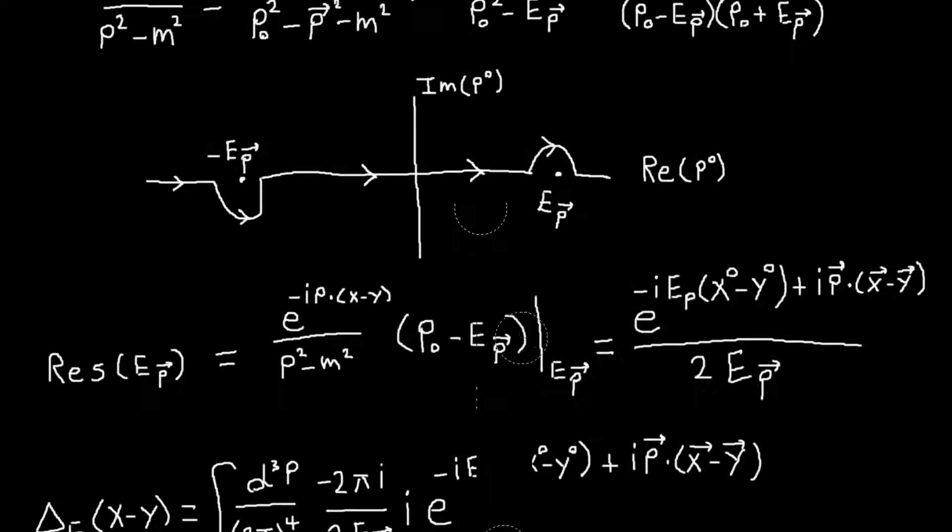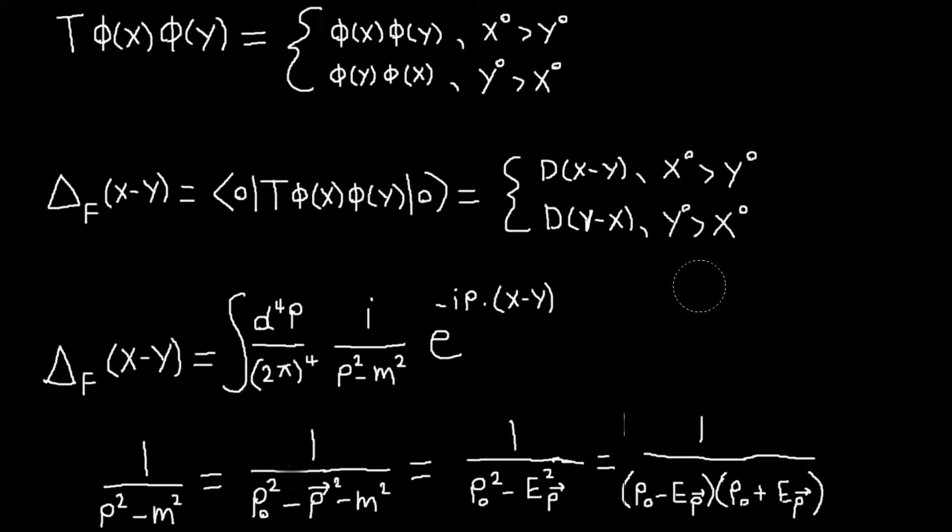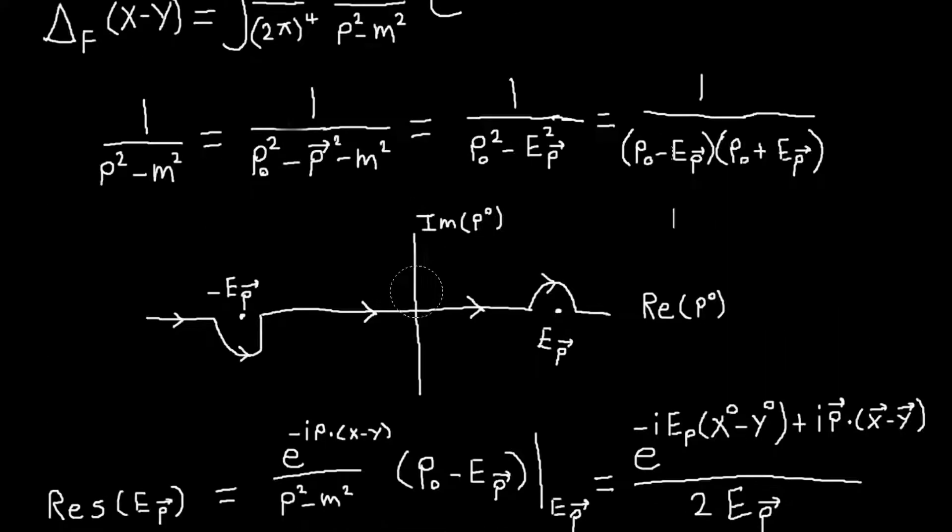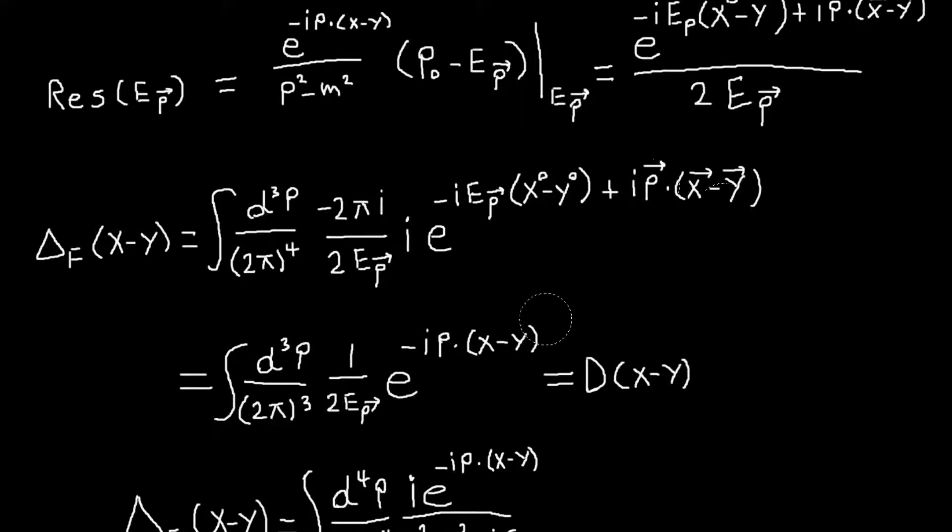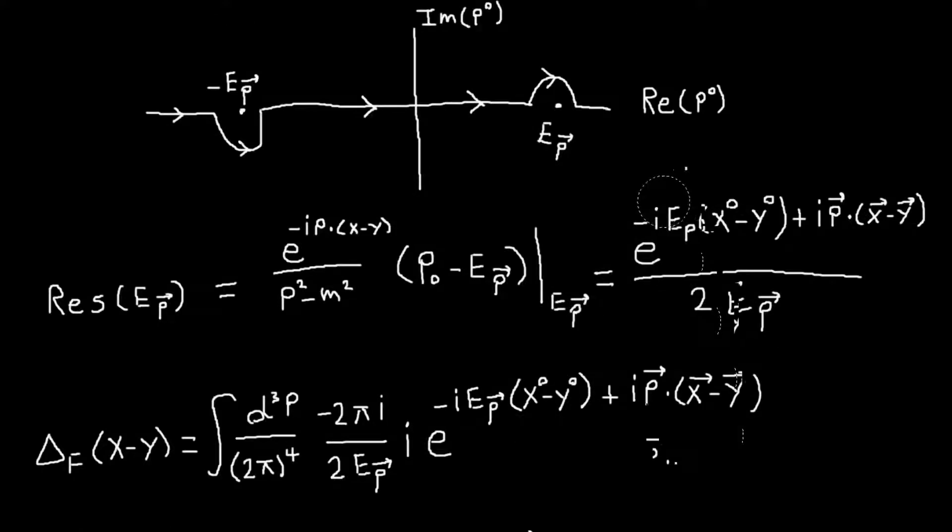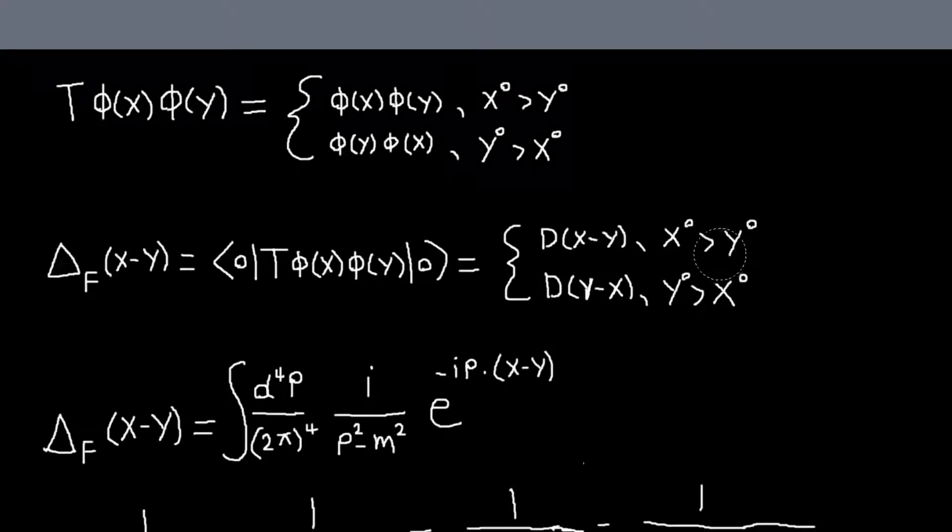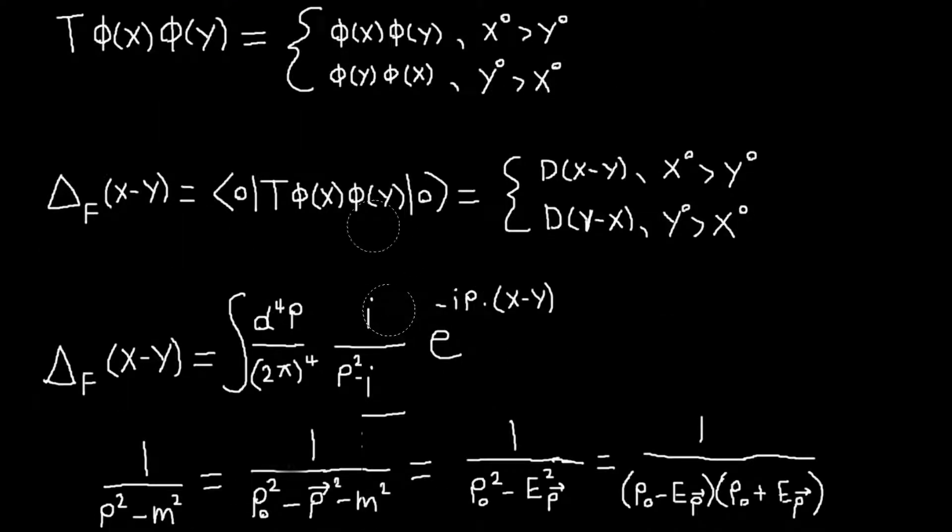So similarly, if we choose, if we have y^0 greater than x^0, then we would choose the contour that closes in the upper plane. And it would all work out very similarly, and we would get D of y minus x. And so that's basically the proof that you can write this expression in terms of this integral. And again, for this contour integral, its value is basically undefined until you choose the contour. So that's how you're able to get multiple cases based on the contour that you choose.